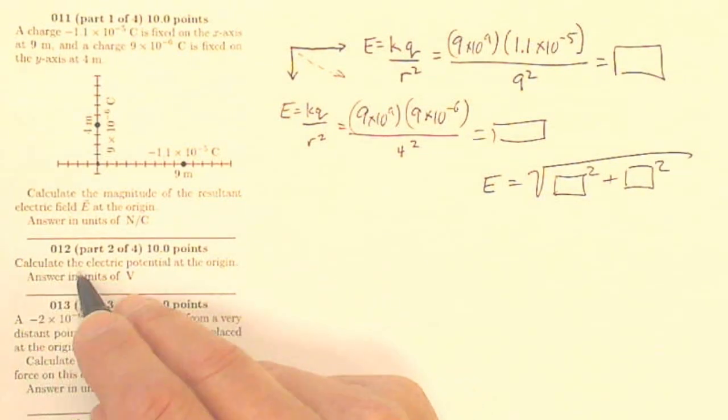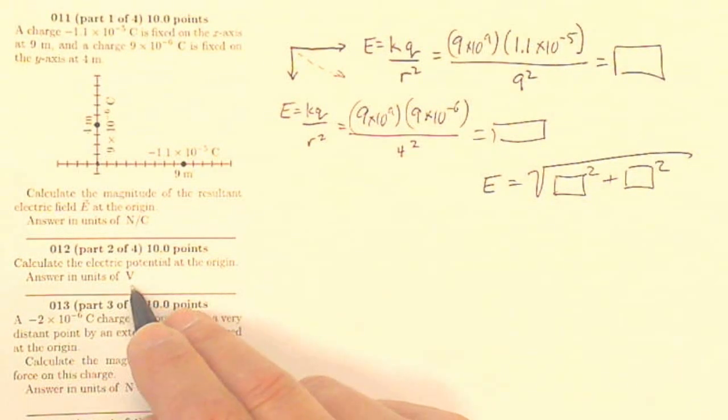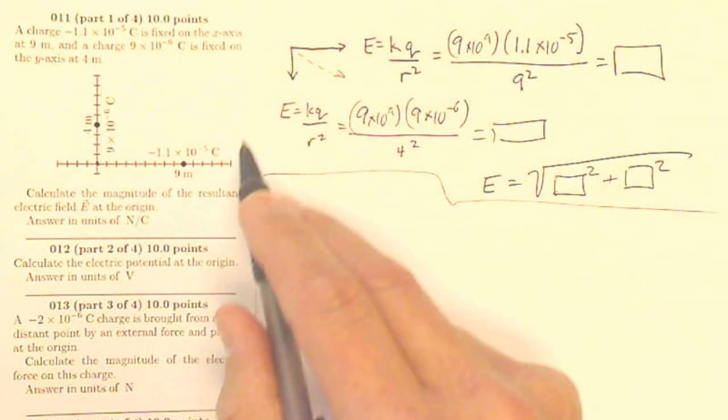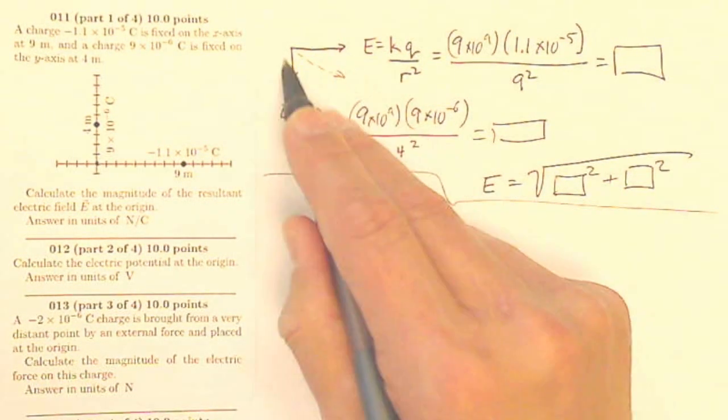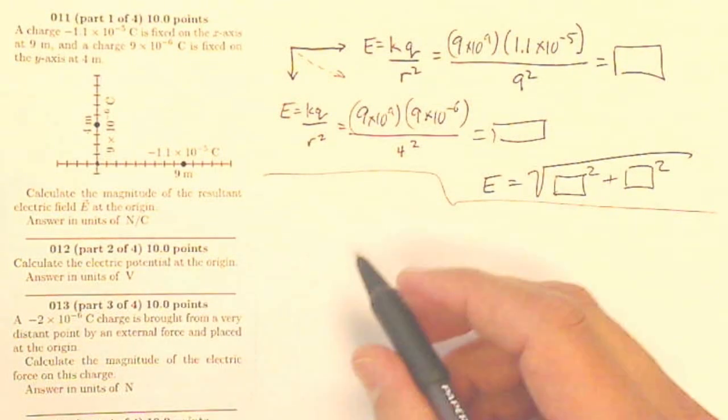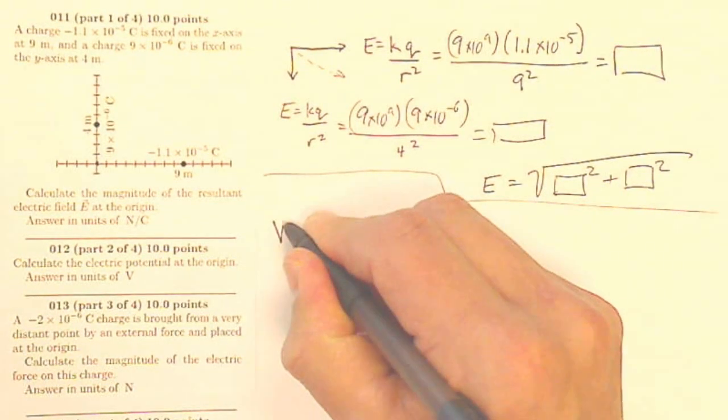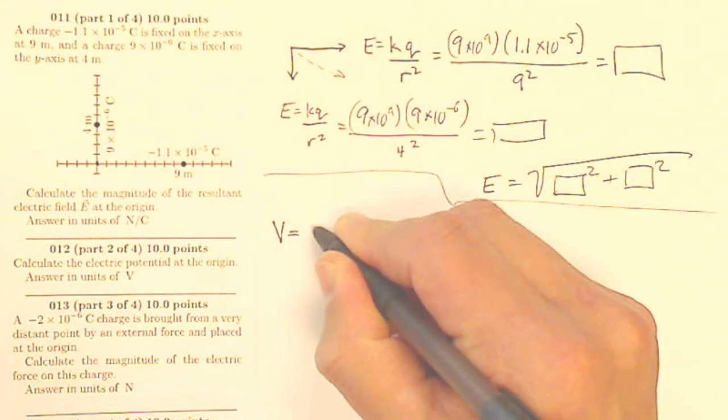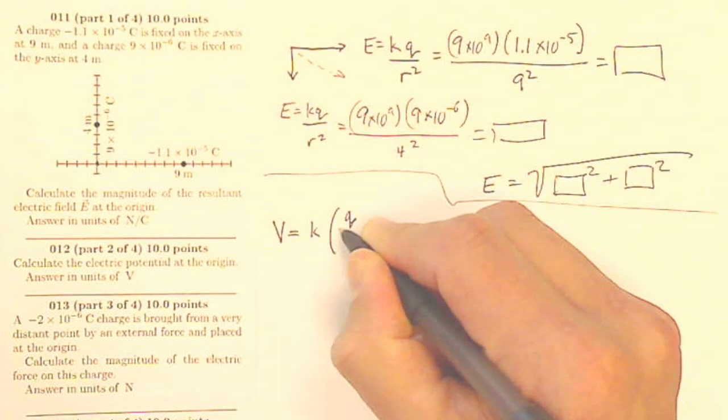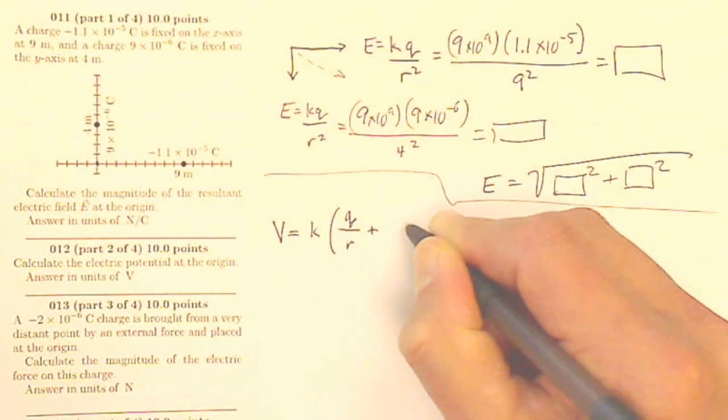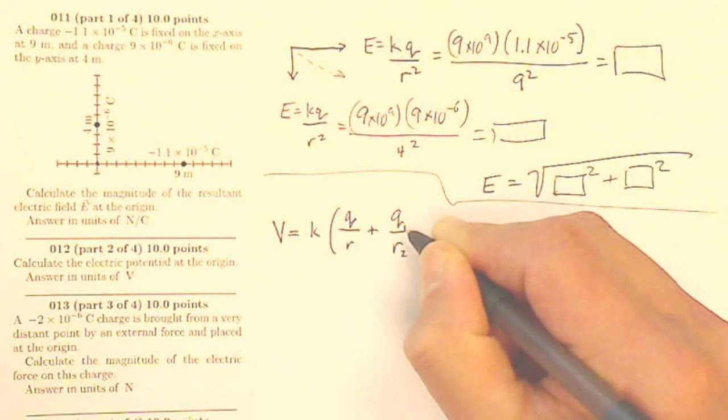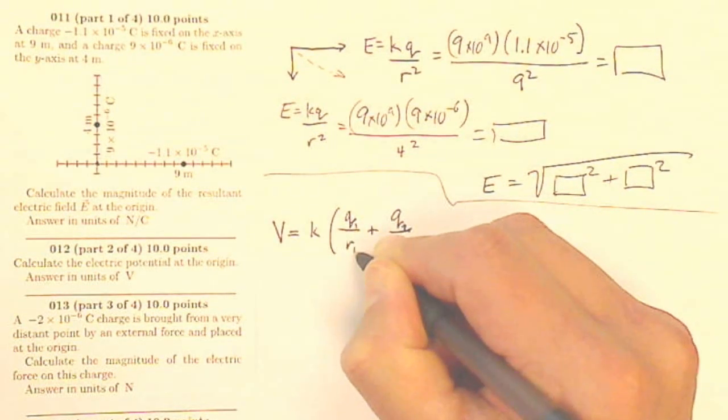Question 12 says, calculate the electric potential at the origin, answer in units of volts. Well, this is a scalar problem. So I don't have to worry about the vectors and trigging them together, because I'm going to get two numbers and I'm just going to deal with them. So what I have there is that my electric potential V is K times the first charge divided by the first radius, plus the second charge divided by the second radius. So this is Q2, R2, and this is Q1 over R1.